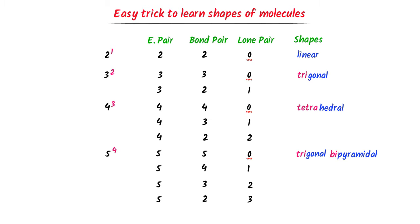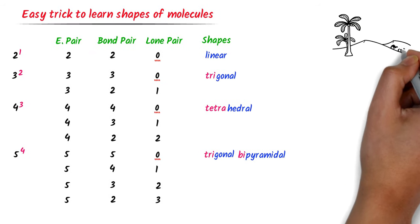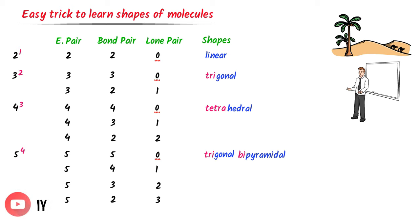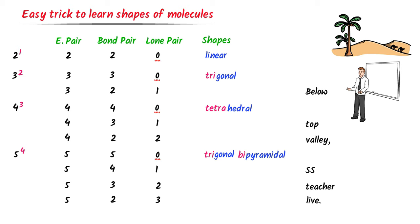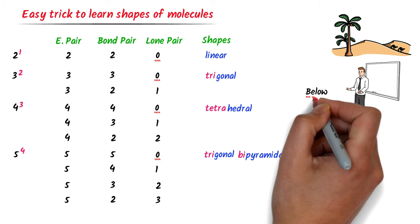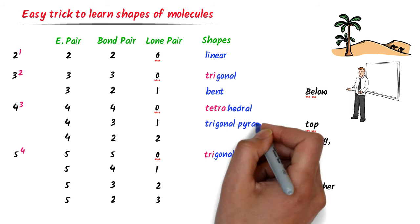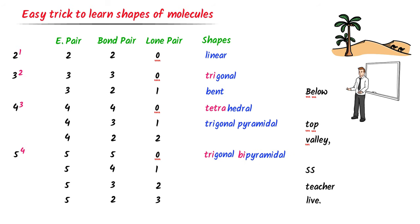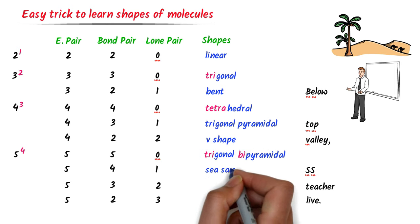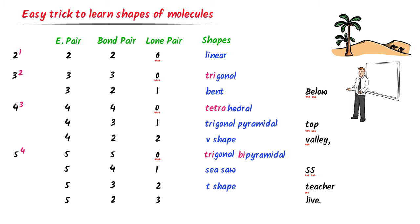Now what about the shapes of the other remaining molecules? I teach my personal mnemonic: consider that your SS teacher lives below a top valley. The phrase is: Below Top Valley, SS Teacher Live. 'BE' and 'Below' stands for bent shape, 'TP' and 'Top' stands for trigonal pyramidal, 'V' and 'Valley' stands for V-shape, 'SS' stands for seesaw, 'T' and 'Teacher' stands for T-shape, and 'LI' and 'Live' stands for linear shape.